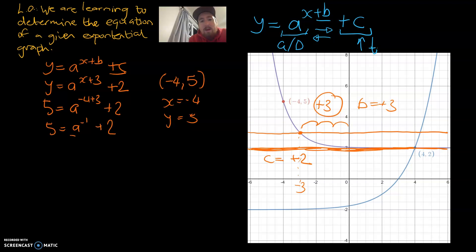Five is equal a to the power of negative one plus two. We're going to use our exponent rules to change that to one divided by a and that plus two is going to move to the other side to be a minus two so that becomes three and that means three a is going to be equal to one, a is equal to one third.